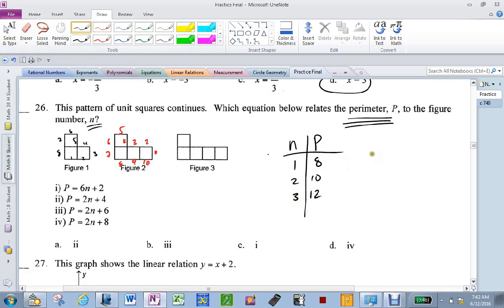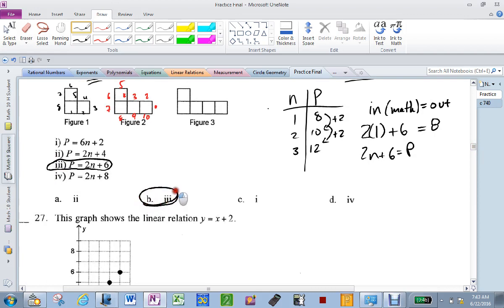So this will be 3, 12. Now, we check. It's always input, math, math equals output. Our input was 1 and then some math to equal our output, which was 8. So what's happening? Plus 2 plus 2. So it must be 2 times 1. And then I need some more math. How do I get to 8? I have to add 6. So that would make it 2n plus 6 equals p. Let's check. 2 times 2 is 4. 4 plus 6 is 10. So we're correct. So it's 3. So now I look down here and I find b is 3.